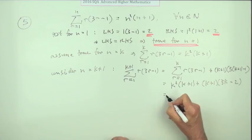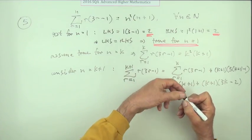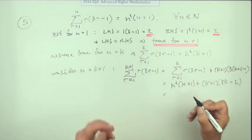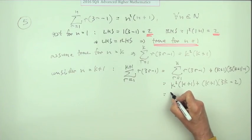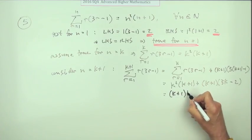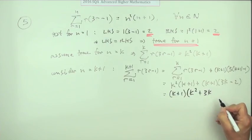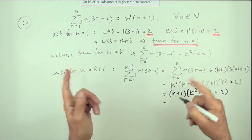Then pen's getting a bit blunt so we'll give it a little sharpen. Take out a common factor k plus 1 and that will be k squared plus 3k and that was a plus 2, plus 2.